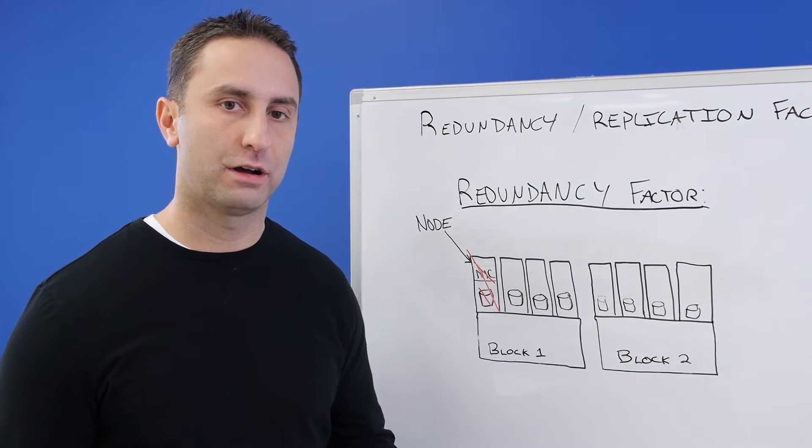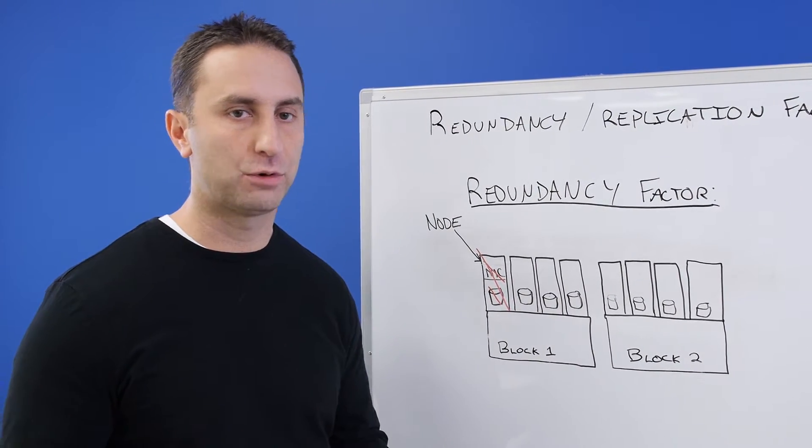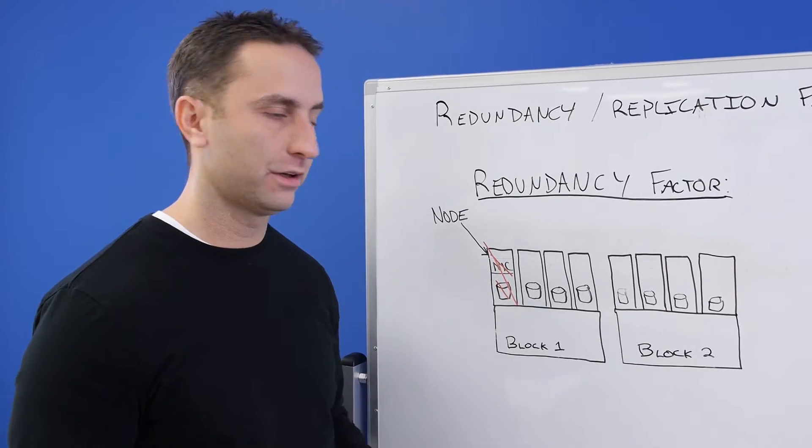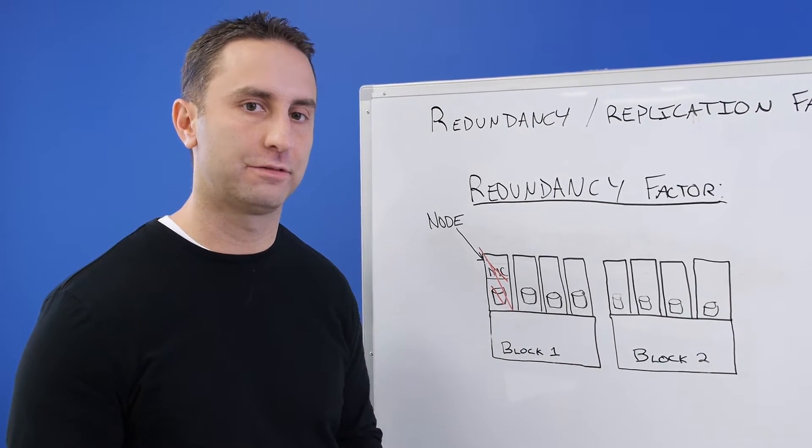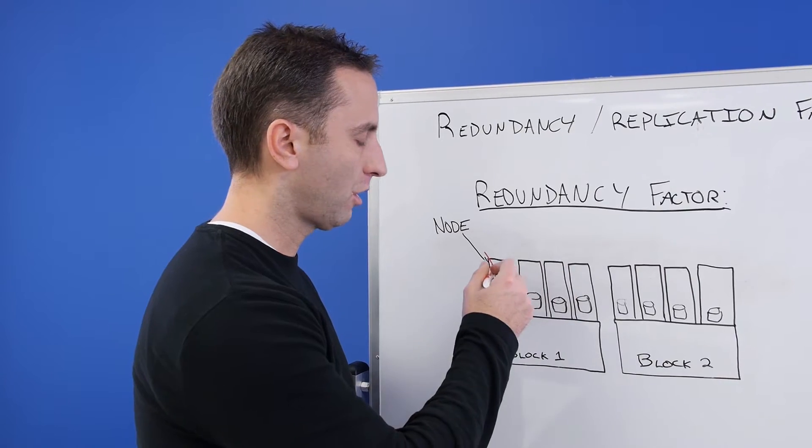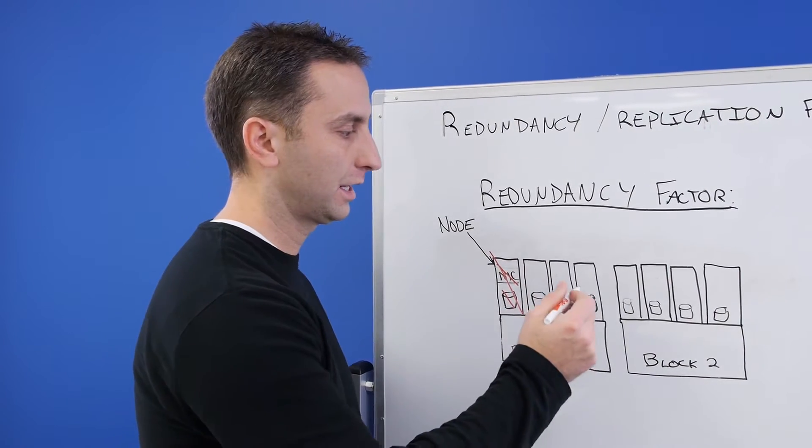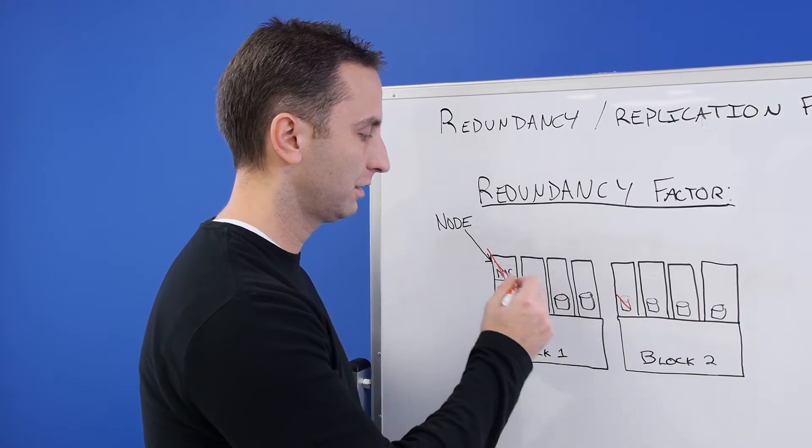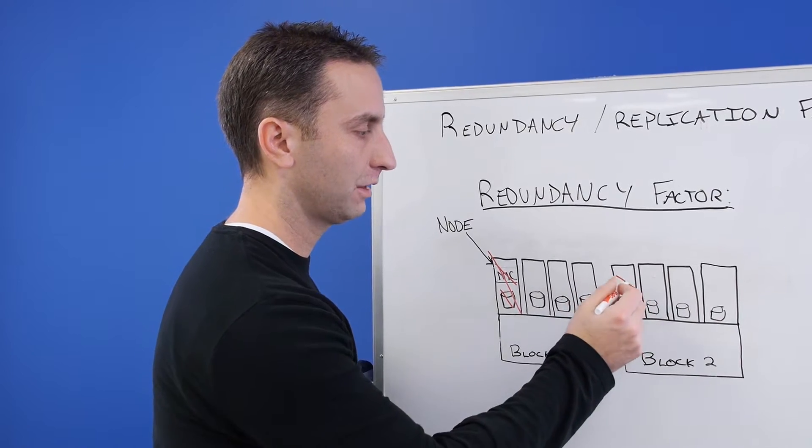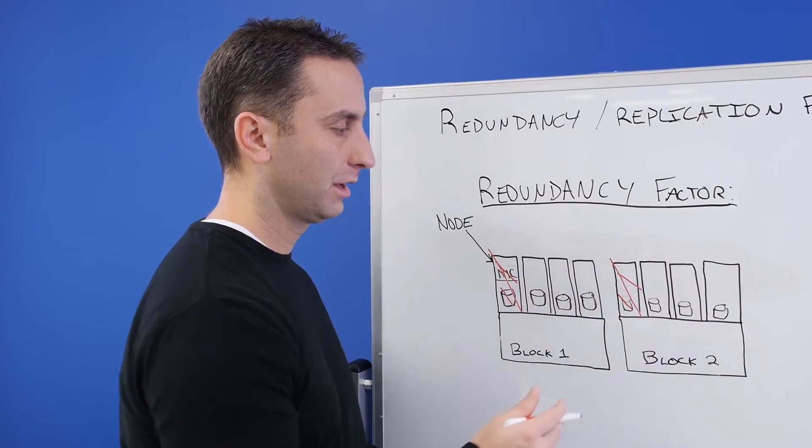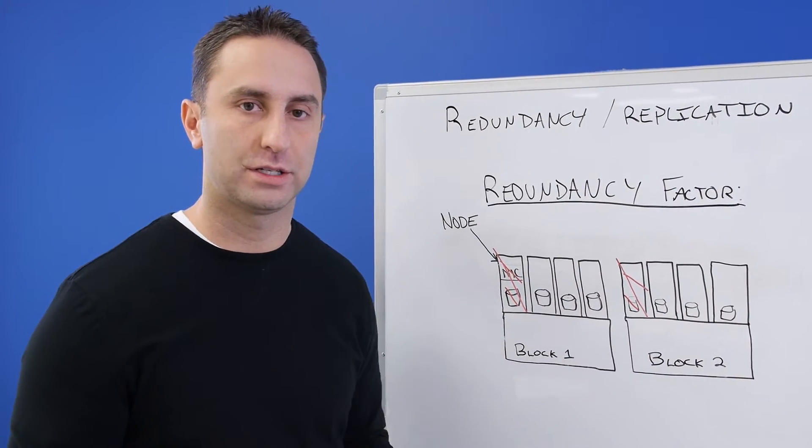That might not be good enough for some people, especially in an enterprise environment. So if you want to be able to tolerate more component failures, you'd want to set your cluster up with redundancy factor of three. You could have these three things go offline, and in addition you could have a second disk fail, a second NIC fail, or a second node fail. You can mix and match which two components fail at the same time in your cluster.